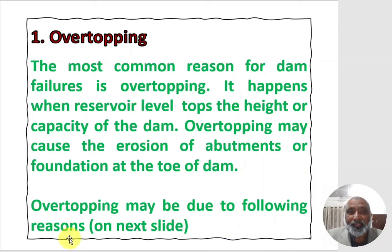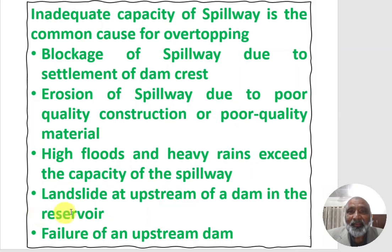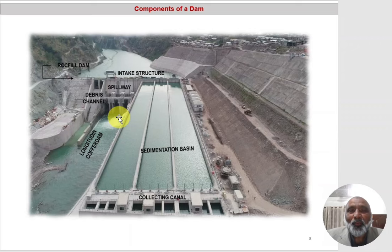Overtopping may be due to the following reasons. The most common cause is inadequate capacity of the spillway. If the spillway has not been properly designed, it will not be capable of discharging extra water during heavy rains or heavy floods, causing overtopping. If the spillway has not been designed keeping in view the maximum probable flood, it will not be capable of discharging floodwater and will overtop the dam, causing its failure.